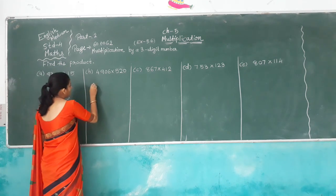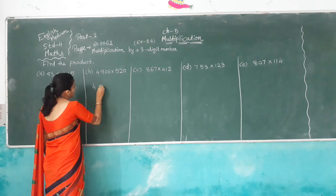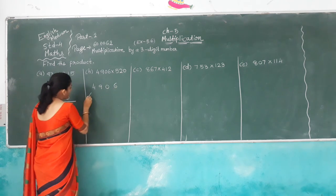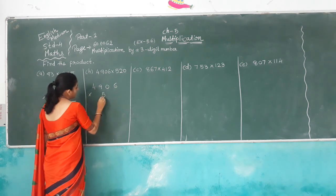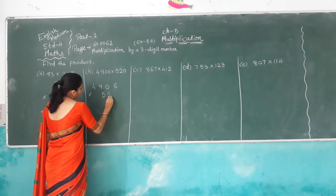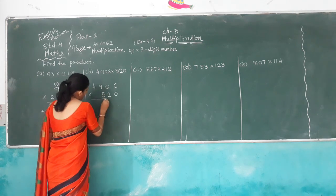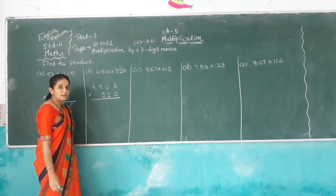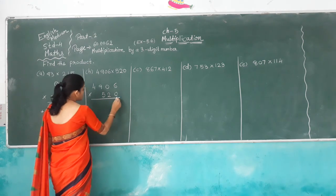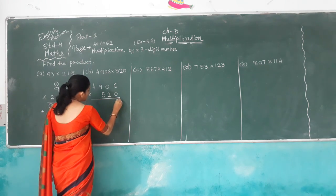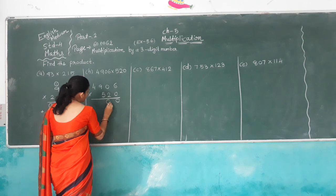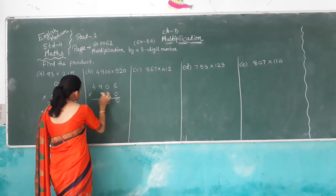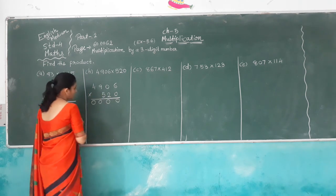Another one: 4,906 multiplied by 5,520. If it is multiplied by 0, you get answer 0. So 0 times 6 is 0, 0 times 0 is 0, 0 times 9 is 0, 0 times 4 is 0.